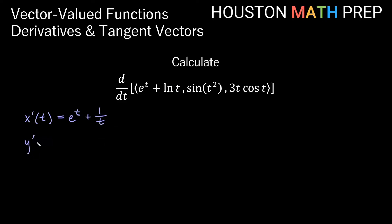For y prime of t, the derivative of our second component: the derivative of sine of t squared. This will be a chain rule. The outside function is sine, and the derivative of sine of something is cosine of something. Taking the derivative of the inside function t squared gives us times 2t.